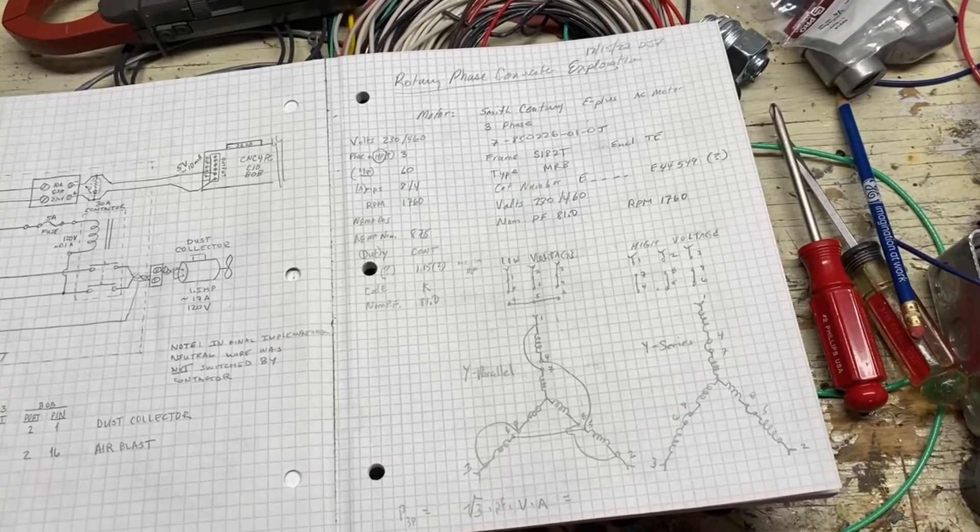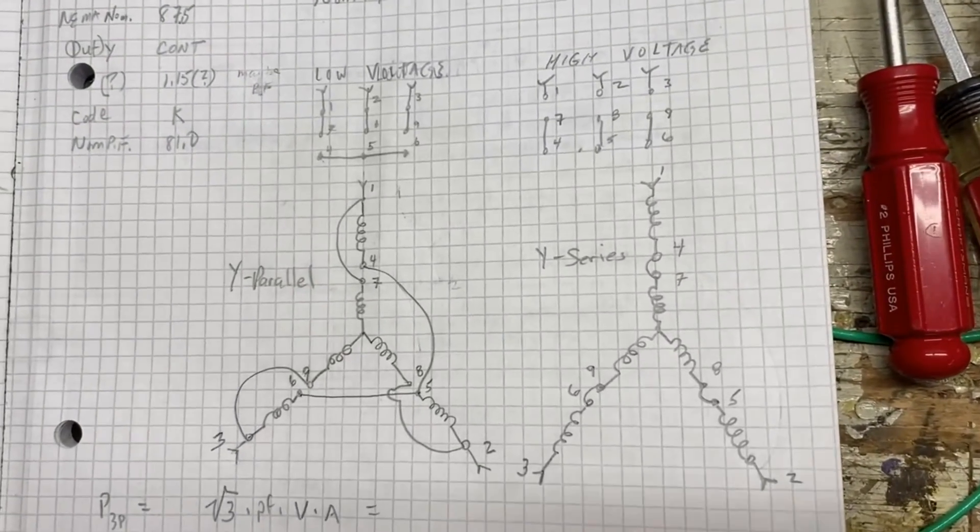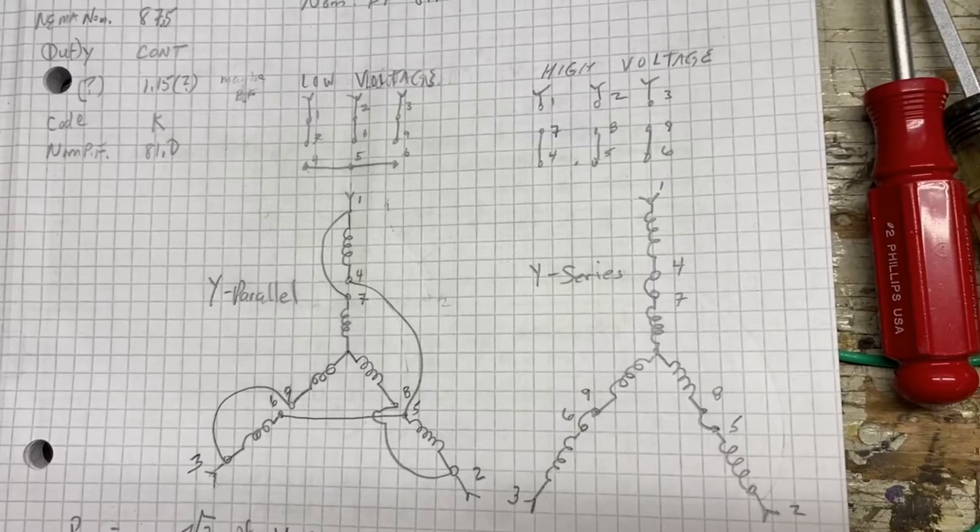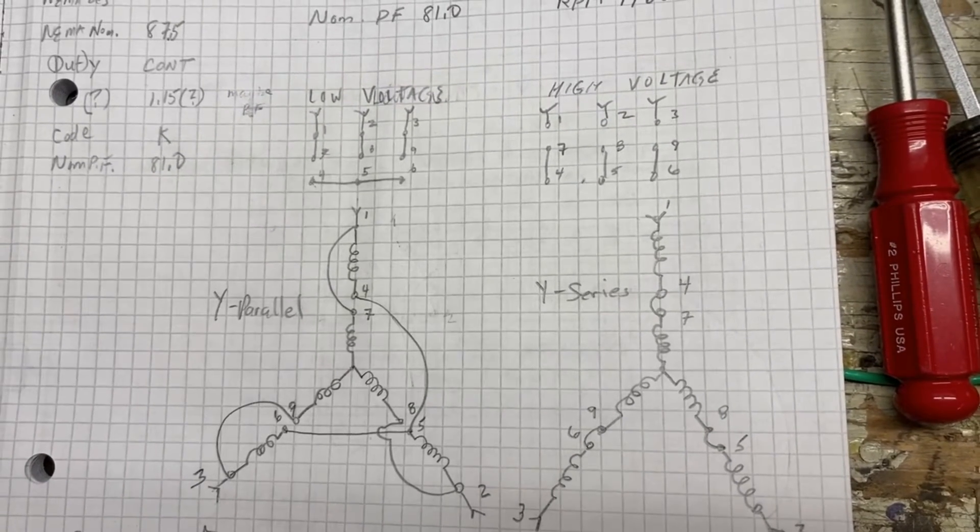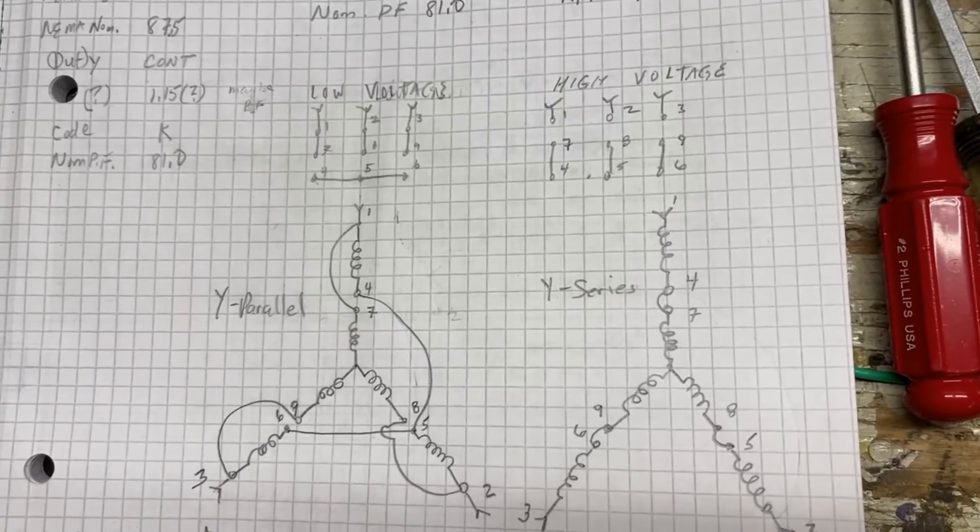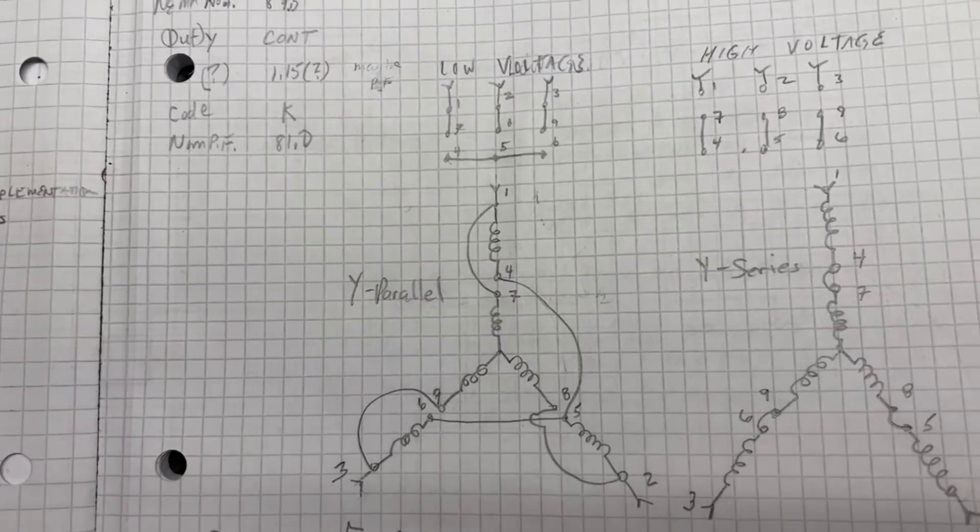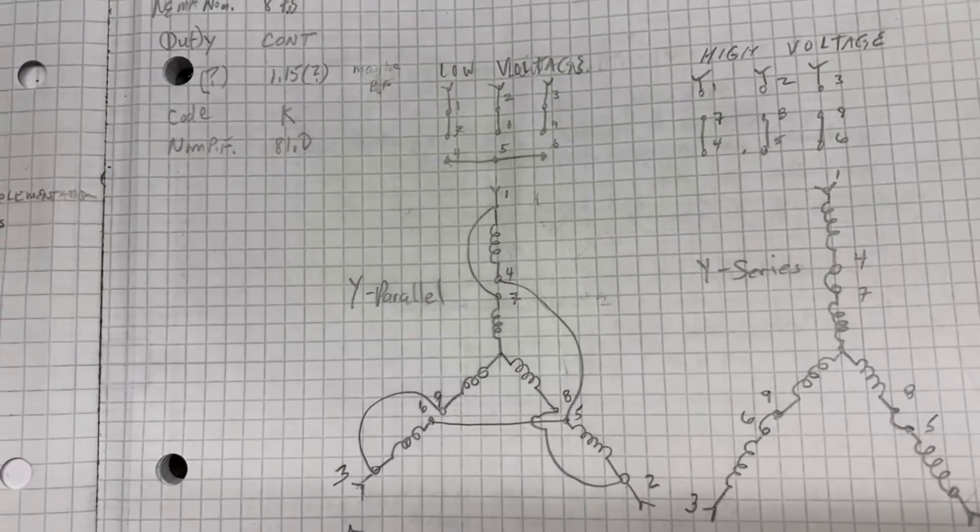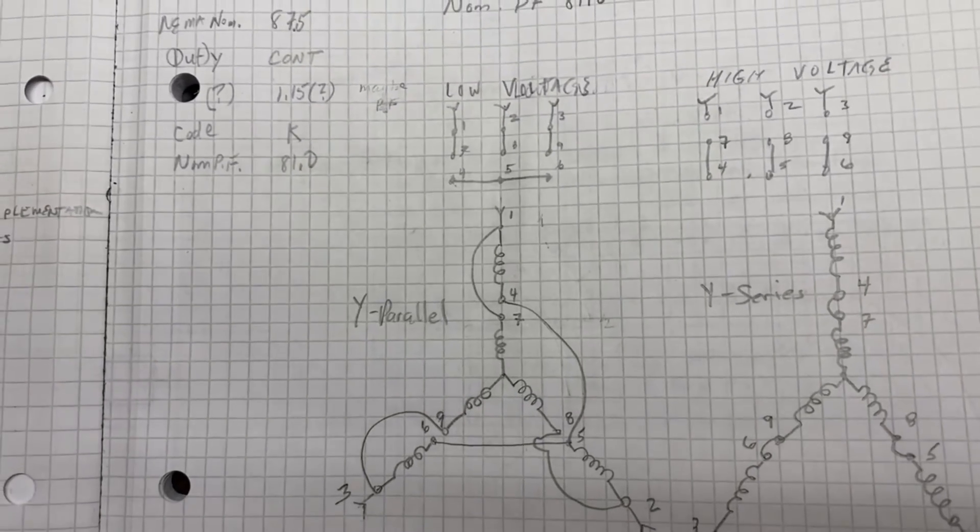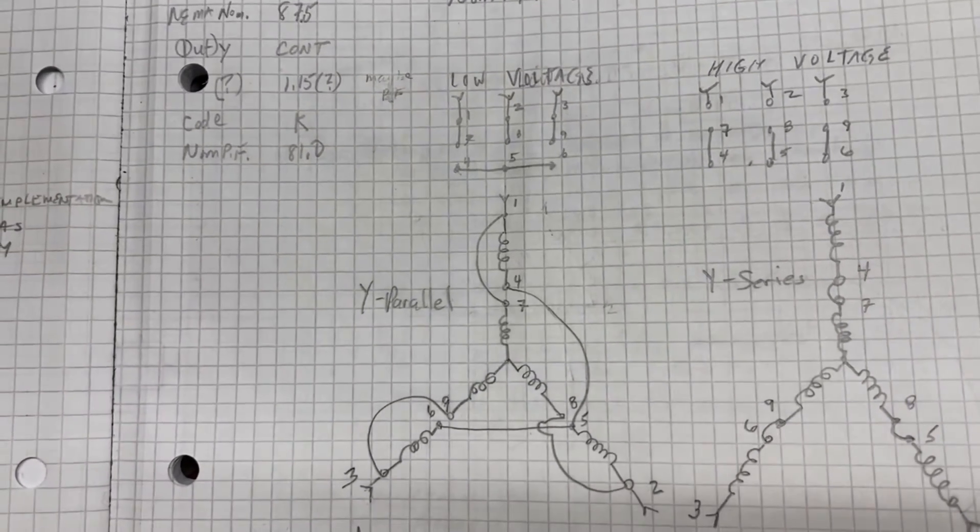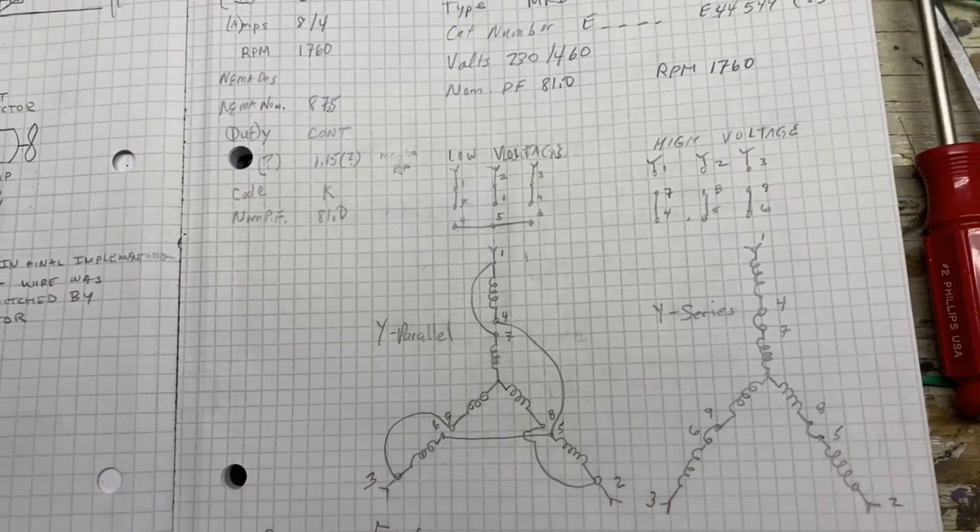Quick note about my three-phase idler motor. I think this probably is the same for many three-phase motors. They can be jumpered, in this case, for 208, 240, and 480. So, I had to make sure it was jumpered in this configuration on the left, which puts the coils of the motor in parallel for 240 volt. They call that low-voltage operation. So, just make sure your motor is jumpered properly if you intend to attempt something like this.